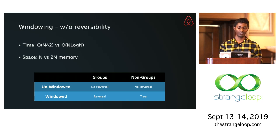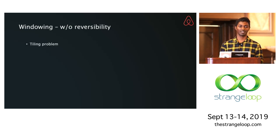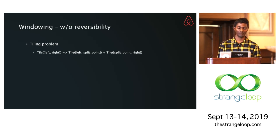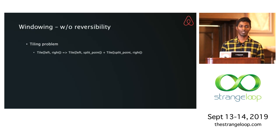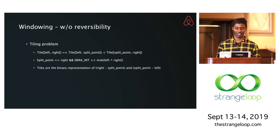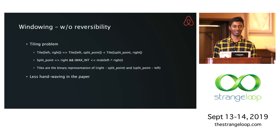This is really a tiling problem — you're tiling the window with nodes that span it. The logic for selecting those nodes can be done recursively by finding a split point aligned to powers of two. We chose the binary tree because it's amenable to bit manipulation, allowing you to find the split point as a closed-form equation. There is a proof that the tiling is the binary representation of the distance of the right and left bound to the split point. We are going to write a paper, and it will be less hand-wavy there.